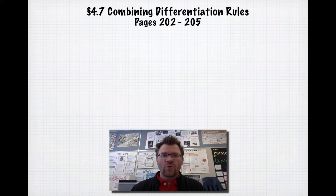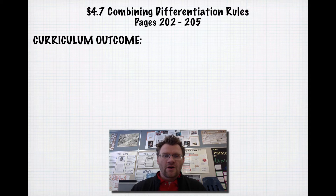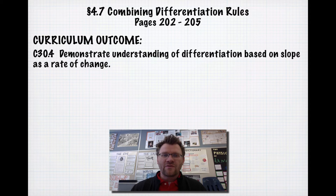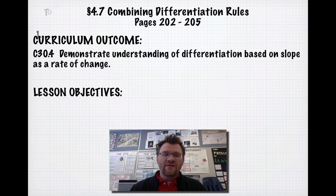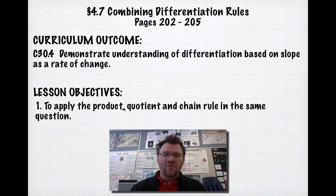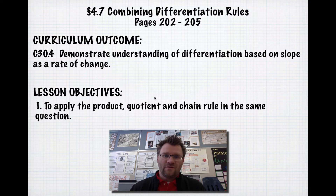Today's lesson is 4.7, combining differentiation rules, on pages 202 to 205 in your text. Our curriculum outcome is to demonstrate understanding of differentiation based on slope as a rate of change. Our lesson objective today is to apply the product, quotient, and chain rule all in the same question.